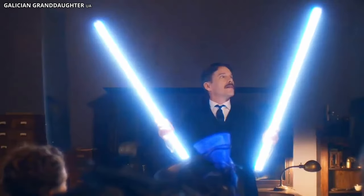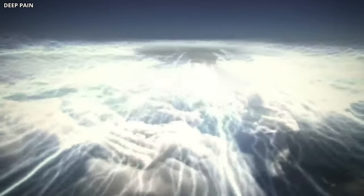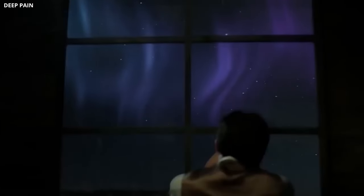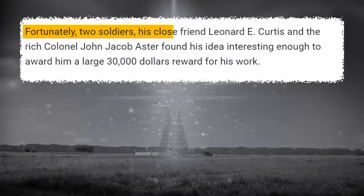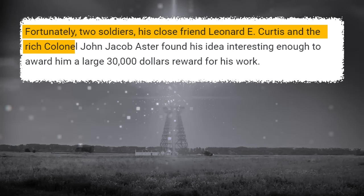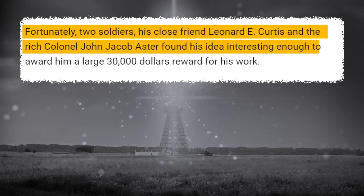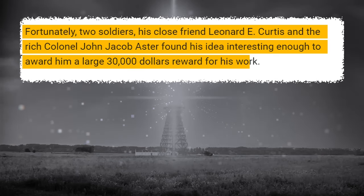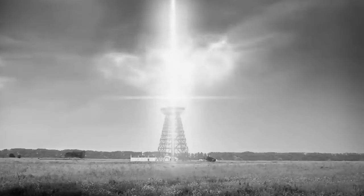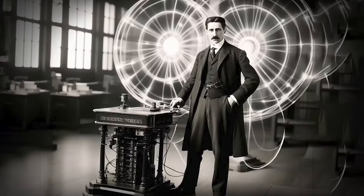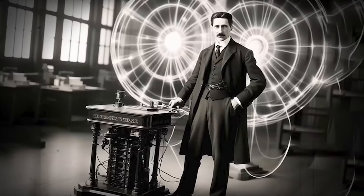In the late 1990s, Tesla came up with an exciting idea. He thought that at high altitudes where the air is thinner, it would be possible to transmit electricity through the air without the need for large wires. This concept fascinated Tesla and motivated him to prove its feasibility. However, he needed financial support to make this ambitious vision a reality. Fortunately, two soldiers, his close friend Leonard E. Curtis and the rich colonel John Jacob Astor found his idea interesting enough to award him a large $30,000 reward for his work. In May 1909, he and his team went to Colorado and chose a site near Pikes Peak as an experimental station. Not only a scientist, but also a showman, Tesla used his charm to attract public interest. He teased journalists by promising to broadcast a radio signal from Pikes Peak.